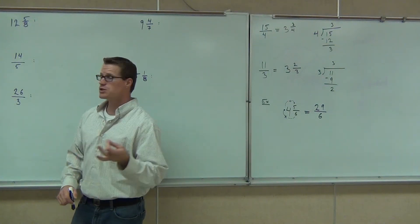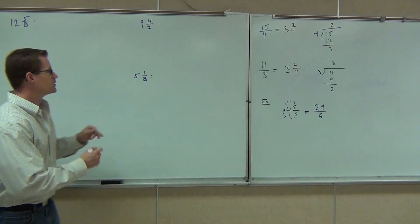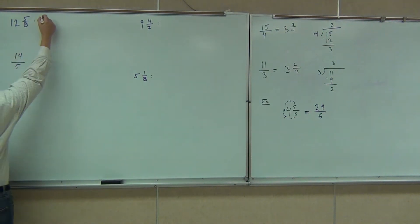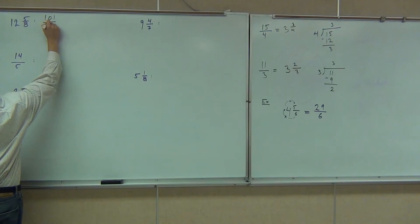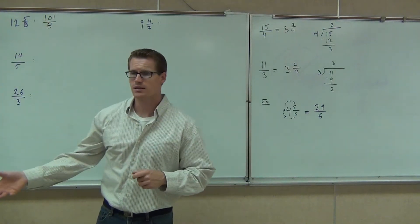96, and then from the 96 what do we do and how much are we going to get? 101 over 8. You could check your work by dividing that and then subtracting.